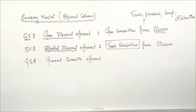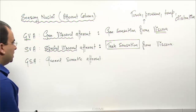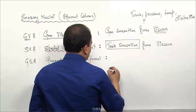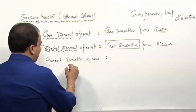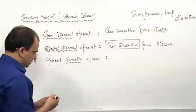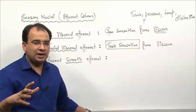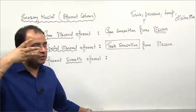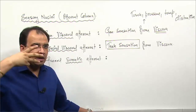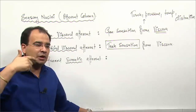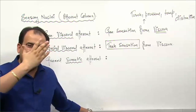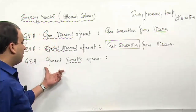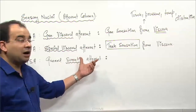Special sensation from the viscera, that is taste sensation. And general somatic afferent - look at the word, this time it is 'somatic,' talking about head and neck, face. What is the nerve which carries the general sensation from the face? The trigeminal nerve - we have ophthalmic, maxillary, and mandibular parts of the trigeminal nerve which carry all kinds of general sensation from the face.